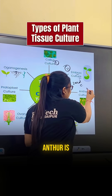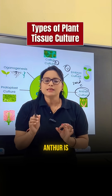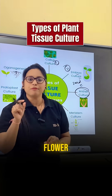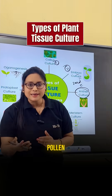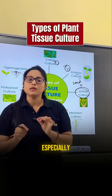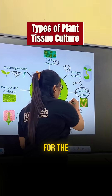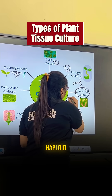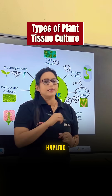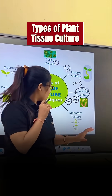Next is anther culture. The anther is the male reproductive part of the plant, containing pollen grains. Anther culture is especially used for producing haploid plants — when we need haploid plants, we go for anther culture.